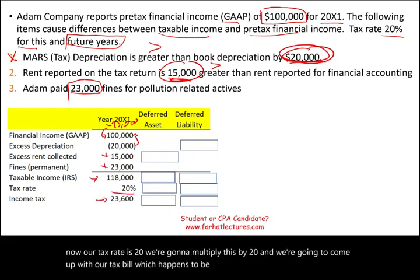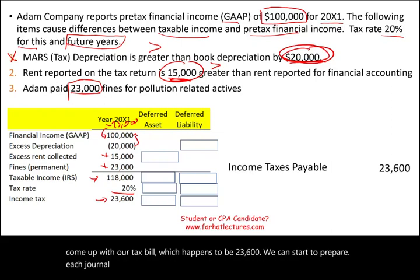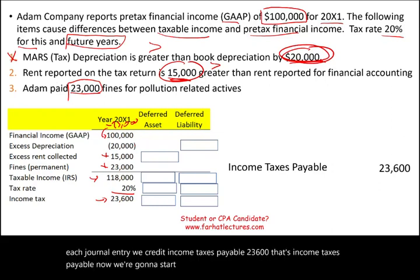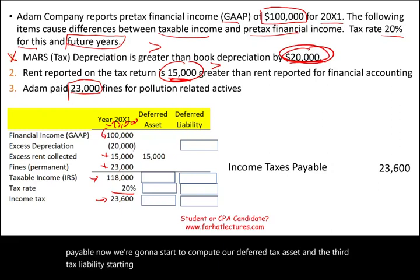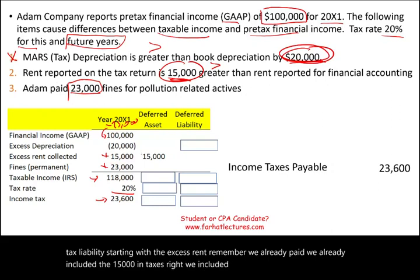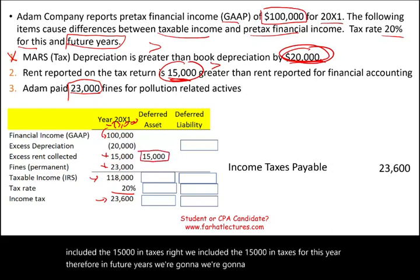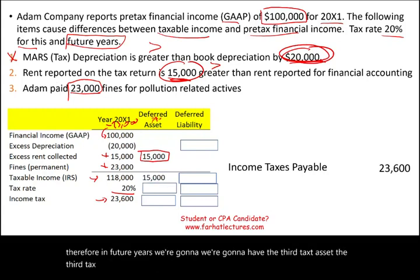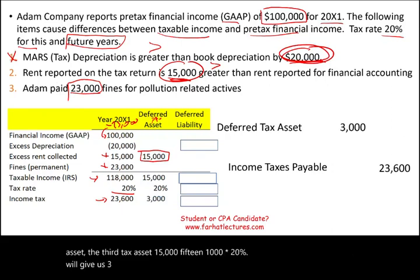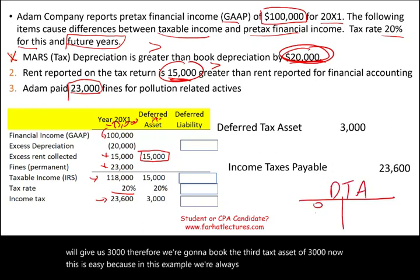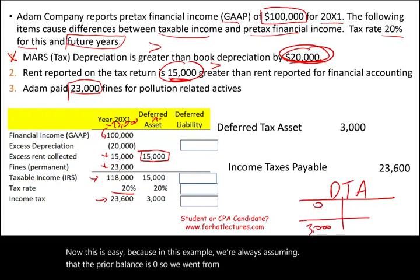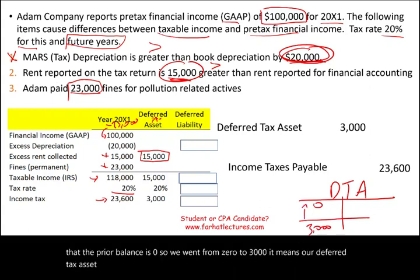Now we compute the deferred tax asset and deferred tax liability. The excess rent of $15,000 was already included in taxes this year, so in future years when it's recognized for GAAP, we won't owe tax again — this creates a deferred tax asset. $15,000 × 20% = $3,000 deferred tax asset. The prior balance was zero, so the deferred tax asset increases by $3,000.